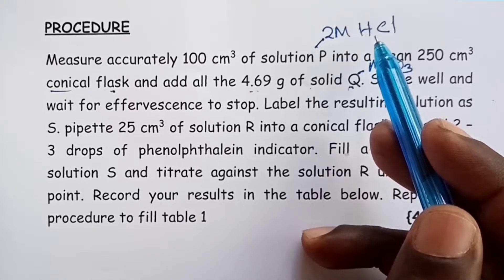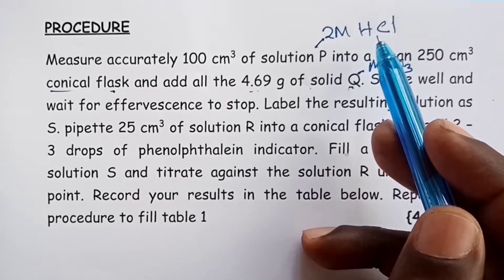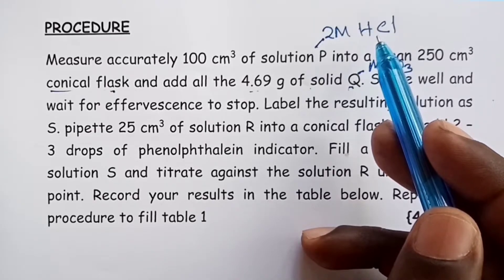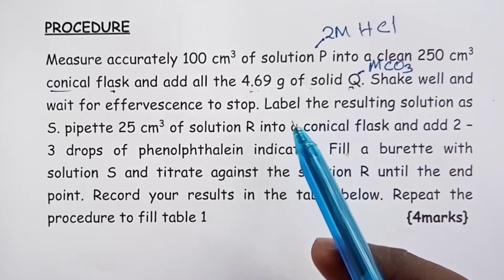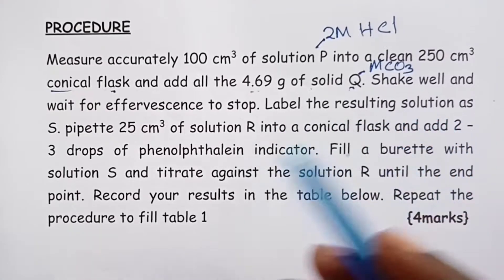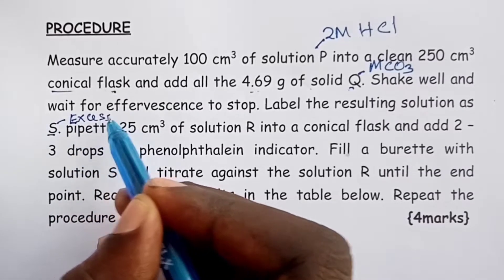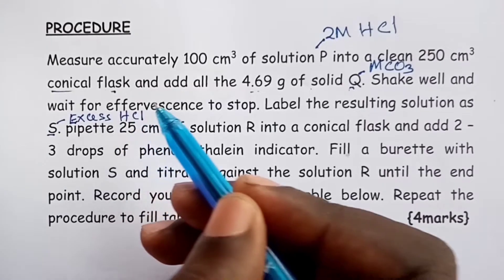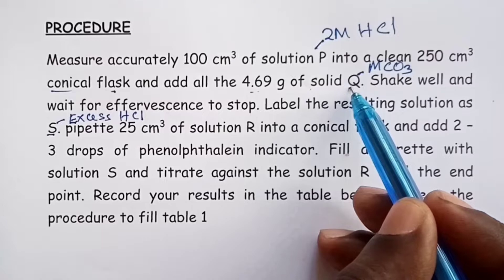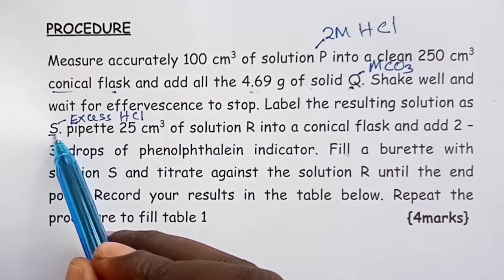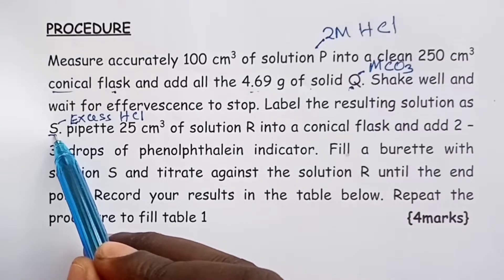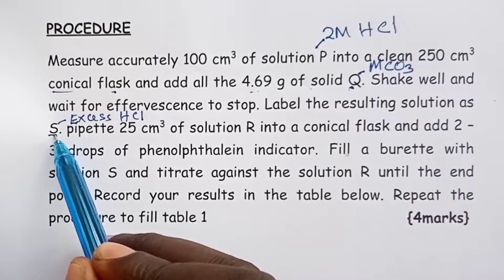Actually, that is the meaning of back titration. One reagent, in simple terms, takes part in two reactions. So proceeding, we are supposed to label the resulting solution as S. This solution S actually is the excess of HCl that did not react with our solid. So now this is what we shall use in titration against sodium hydroxide solution. If a student understands back titration from that perspective, it becomes quite easy to maneuver.